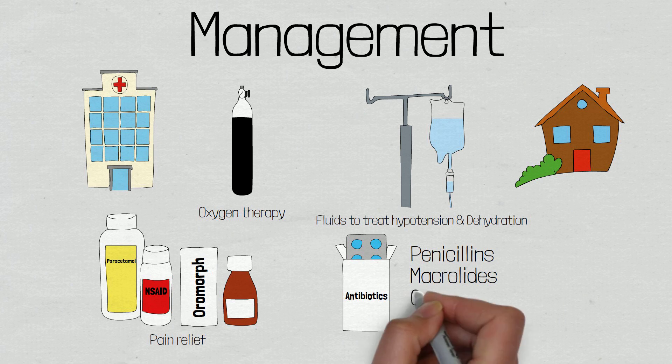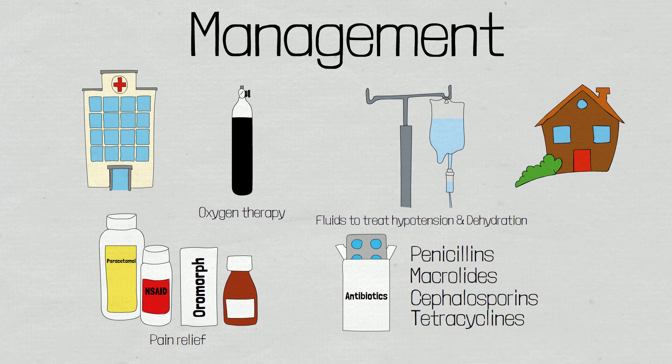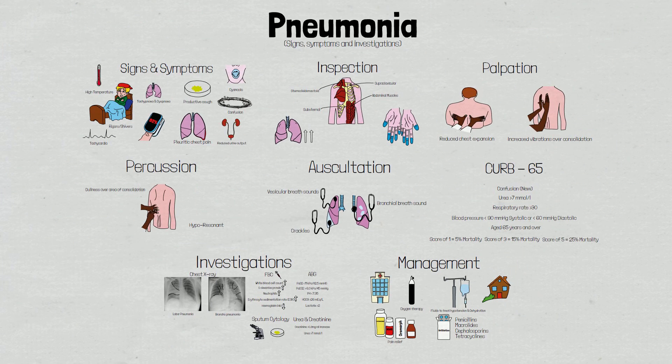Other antibiotics that may be used are cephalosporins and tetracyclines. When managing a patient in the community, it is important to take into consideration social factors, such as whether the patient has anyone who can help them, whether they can manage with daily living activities, whether they will remain compliant with the treatment plan, and whether they are capable of calling for help if they were to deteriorate. Thank you for watching and I hope you found this video helpful. Be sure to check out our other videos and if there are any topics you would like us to cover, please leave a comment in the comment section below.